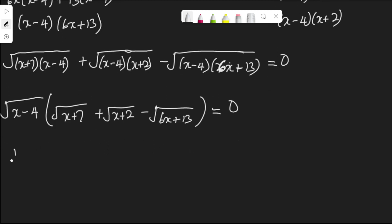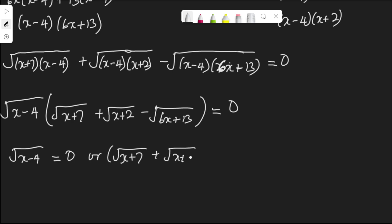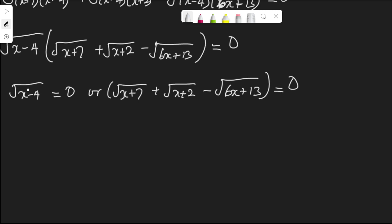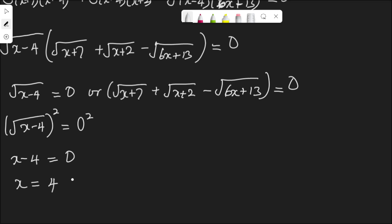So it's either root(x minus 4) equals 0, or root(x plus 7) plus root(x plus 2) minus root(6x plus 13) equals 0. For the first case, to clear the radical we square both sides: (x minus 4) squared equals 0 squared, which means x minus 4 equals 0, so x equals 4.